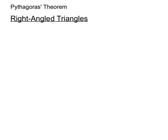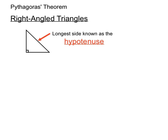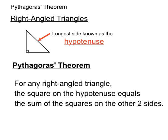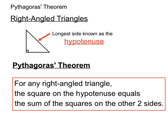Pythagoras' Theorem works on right-angled triangles, and here's a right-angled triangle. The longest side of a right-angled triangle is known as the hypotenuse. Pythagoras' Theorem states that for any right-angled triangle, the square on the hypotenuse equals the sum of the squares on the other two sides.